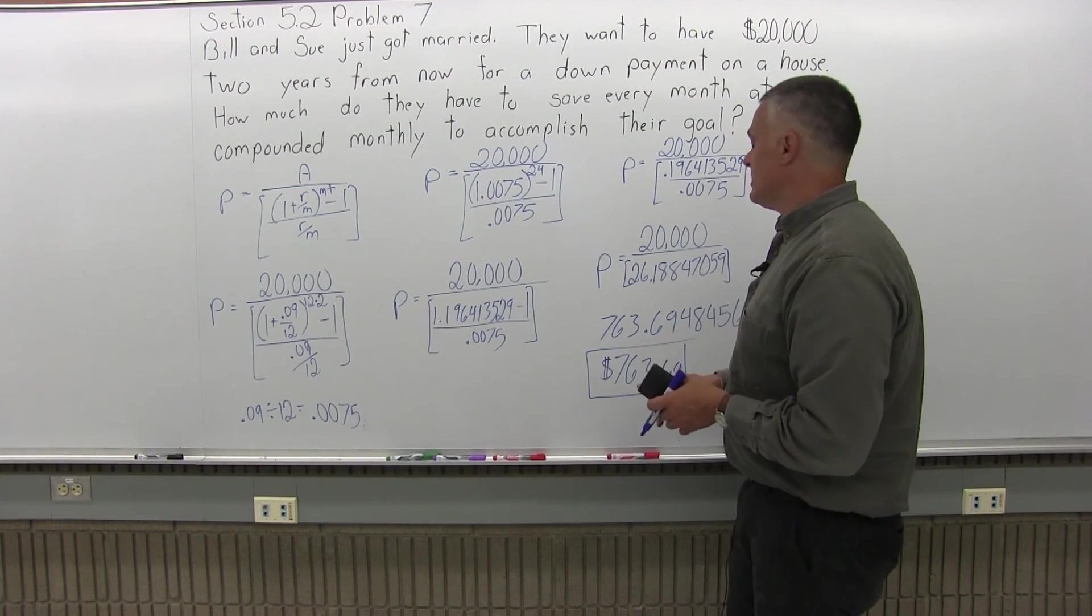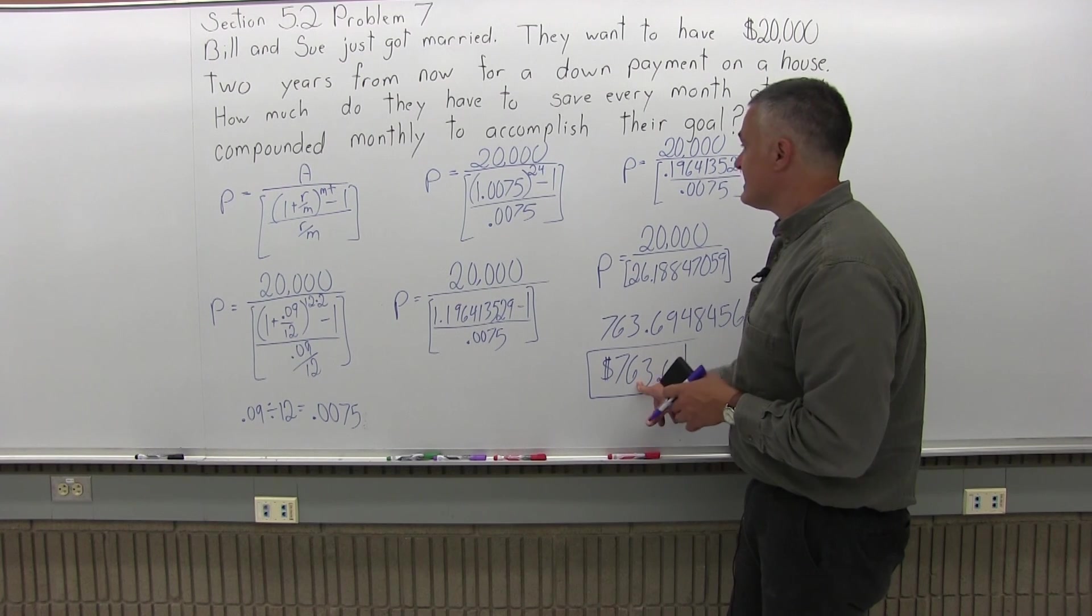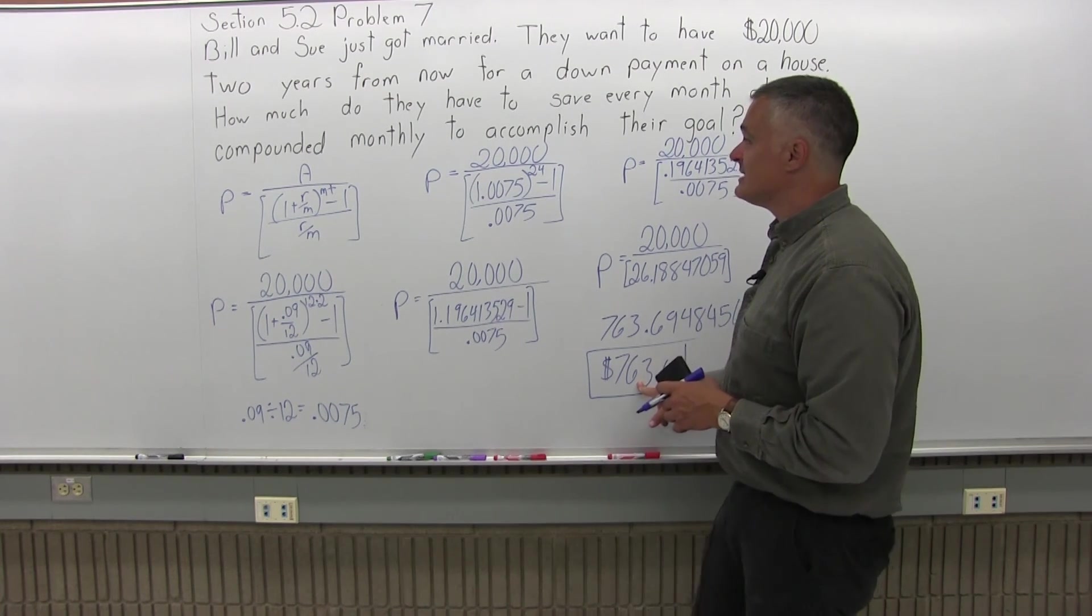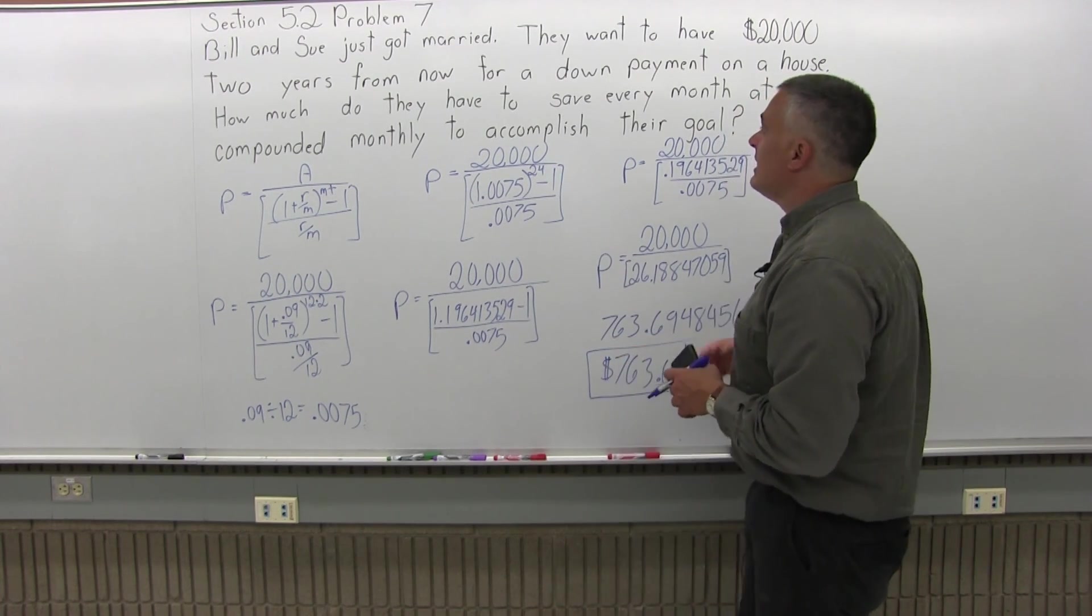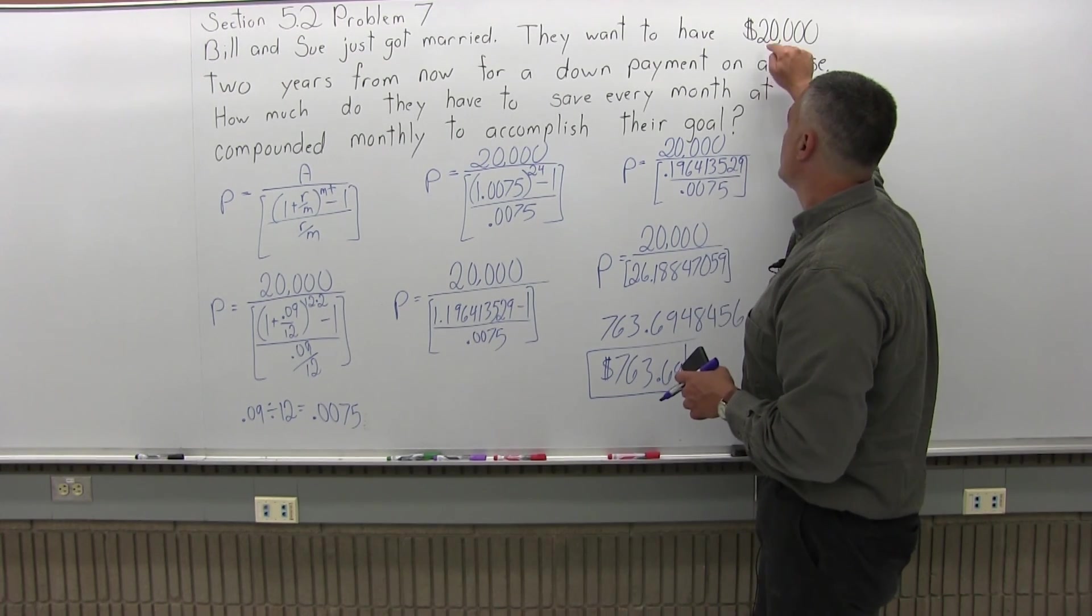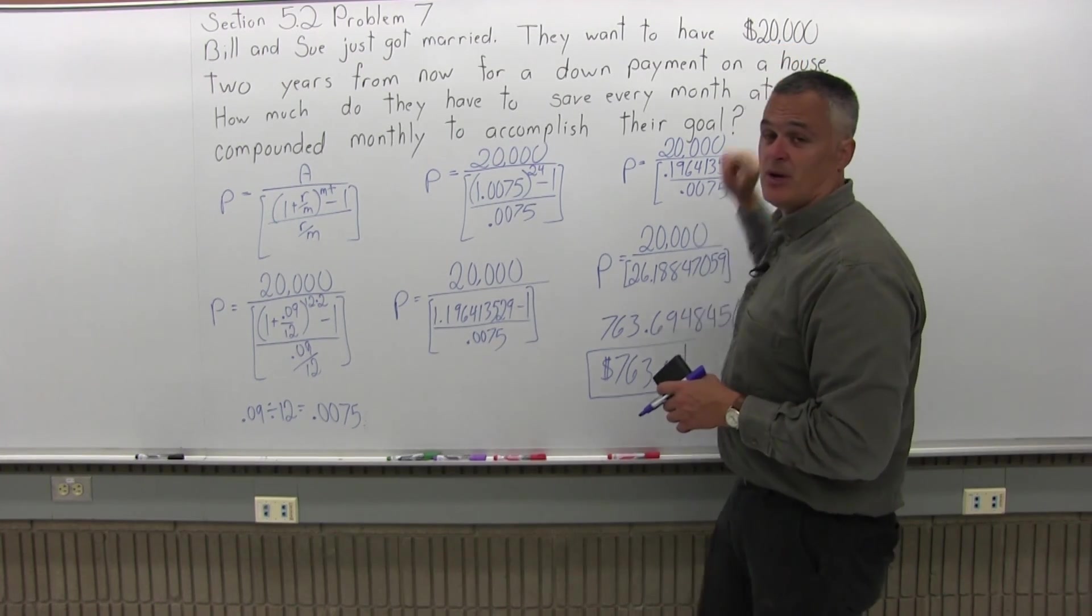So if Bill and Sue save $763.69 every month, in two years, they'll have the $20,000 they need for down payment on a new home.